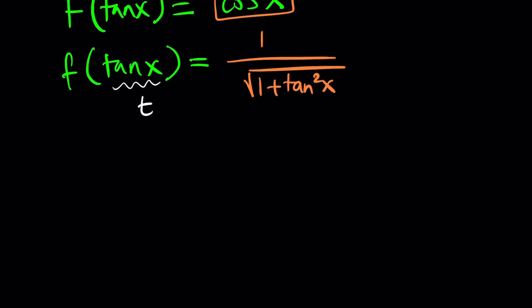Tangent to tangent. Now, you can go ahead and replace this tangent with something, maybe t. And this will also be t. But t squared, of course. So you're going to get the following. F of t equals 1 over the square root of 1 plus t squared. Of course,